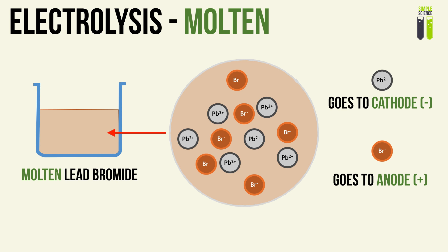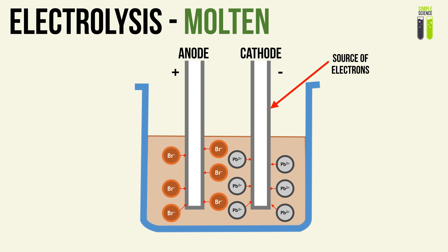For electrolysis of a molten liquid, a common example is molten lead bromide. In molten liquids, there are usually only two species involved: a positive metal ion and a negative non-metal ion. The positive metal ion, since it's positive, will be attracted to the cathode. The negative non-metal ion — in this case bromide minus — will be attracted to the anode, because the anode is positive and negative attracts positive.